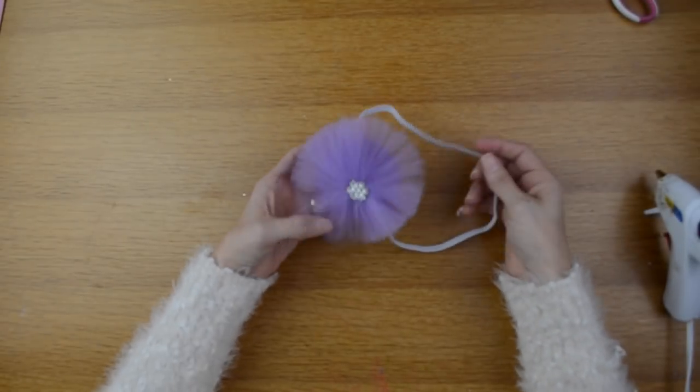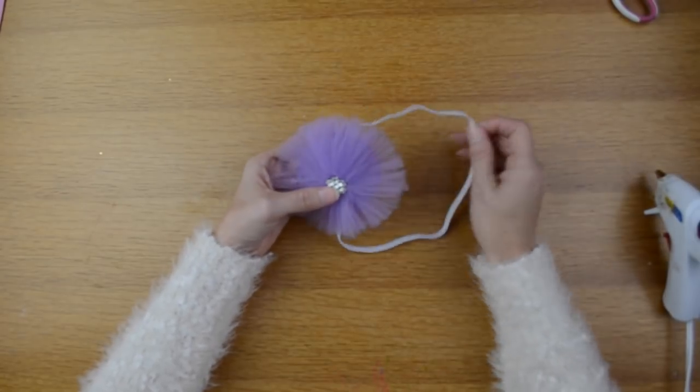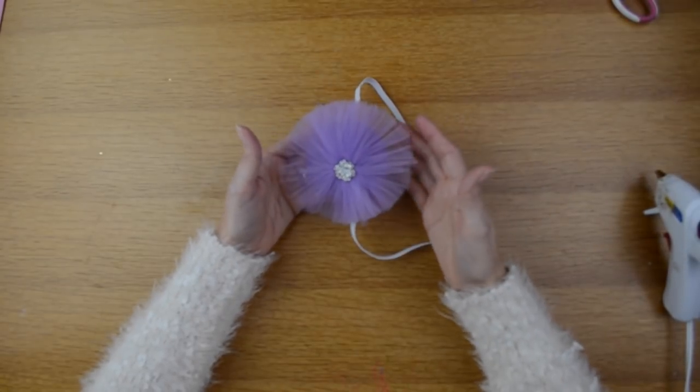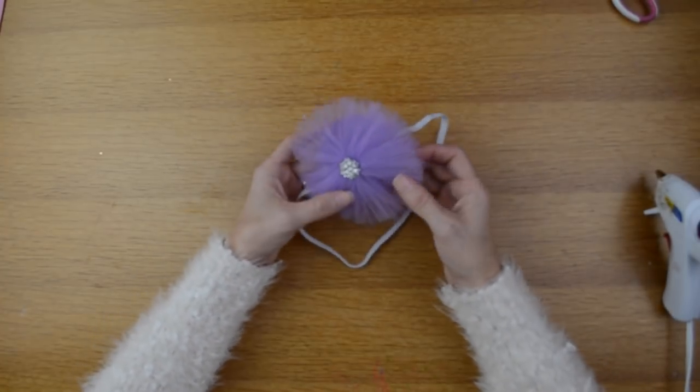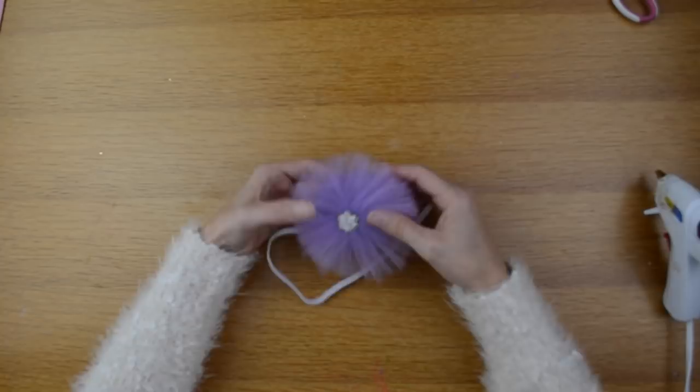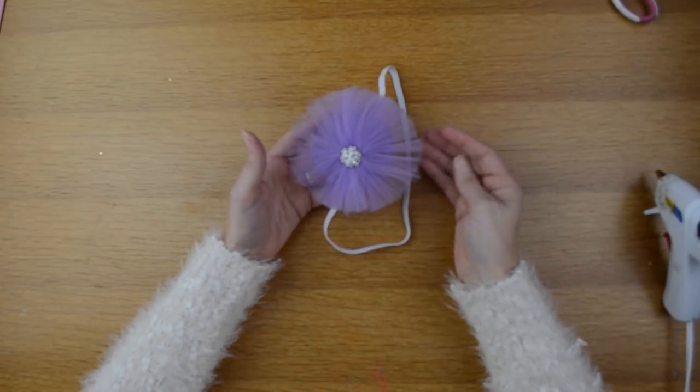Then you will have a cute flower tulle headband. I think this turned out really cute. It's a cheap and easy way to make a cute little headpiece. You can wear it for a special occasion or make it for first birthday photos. That's what I'm making this for, for a little baby that is turning one years old.